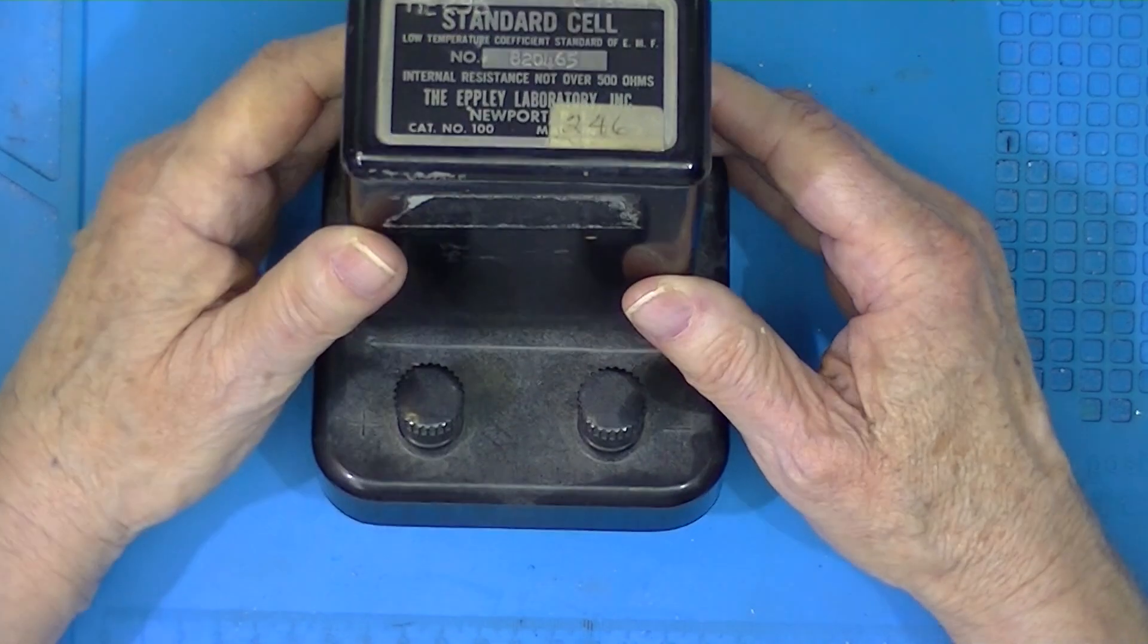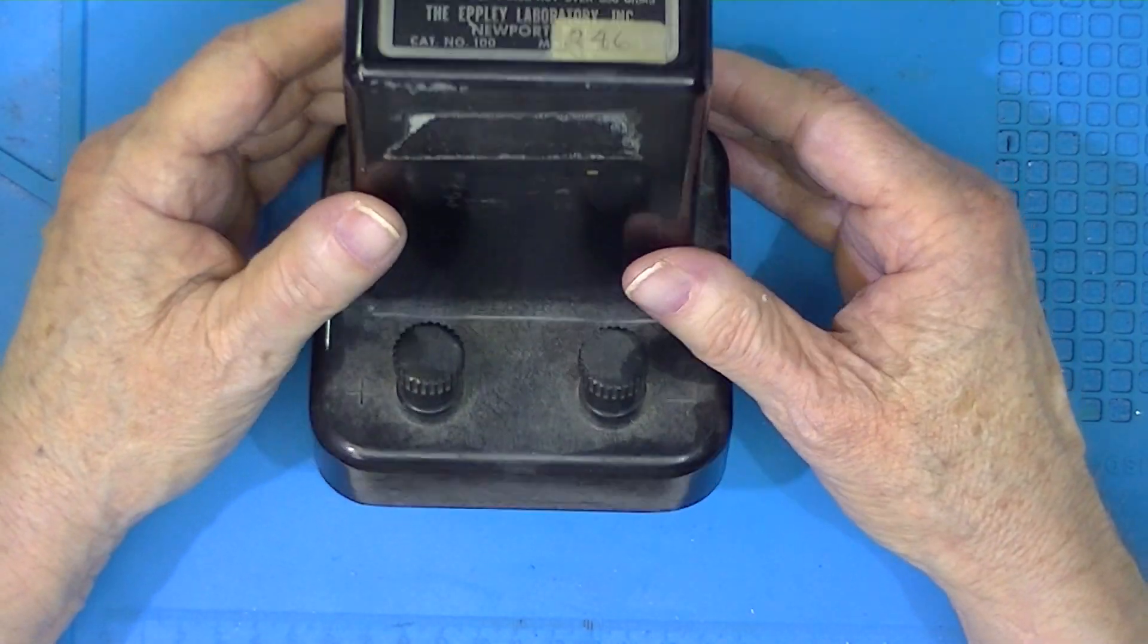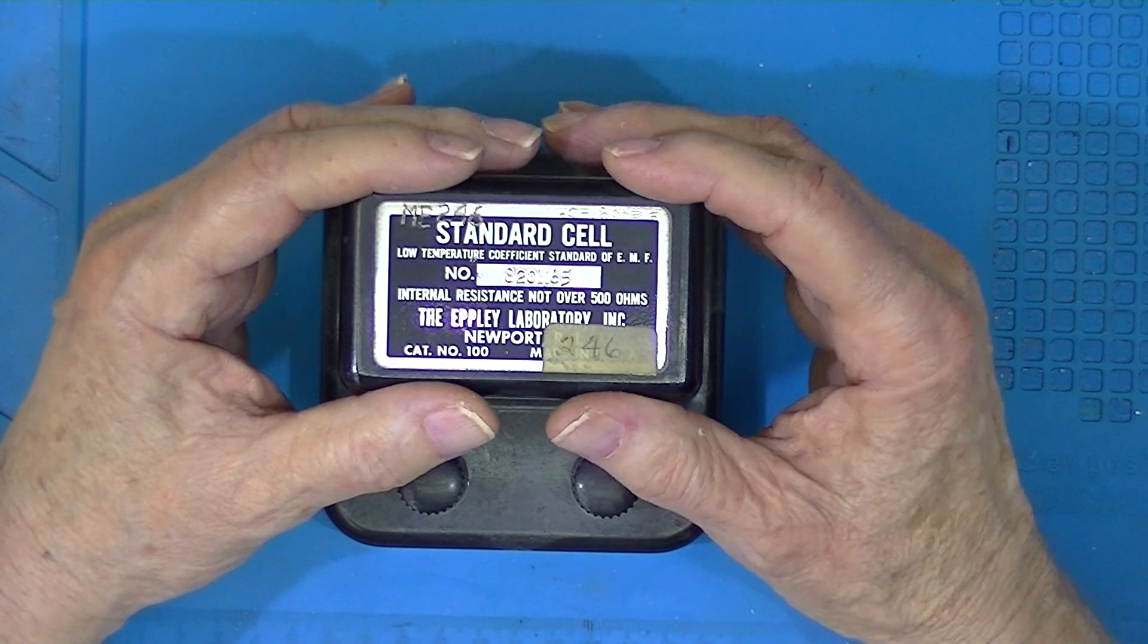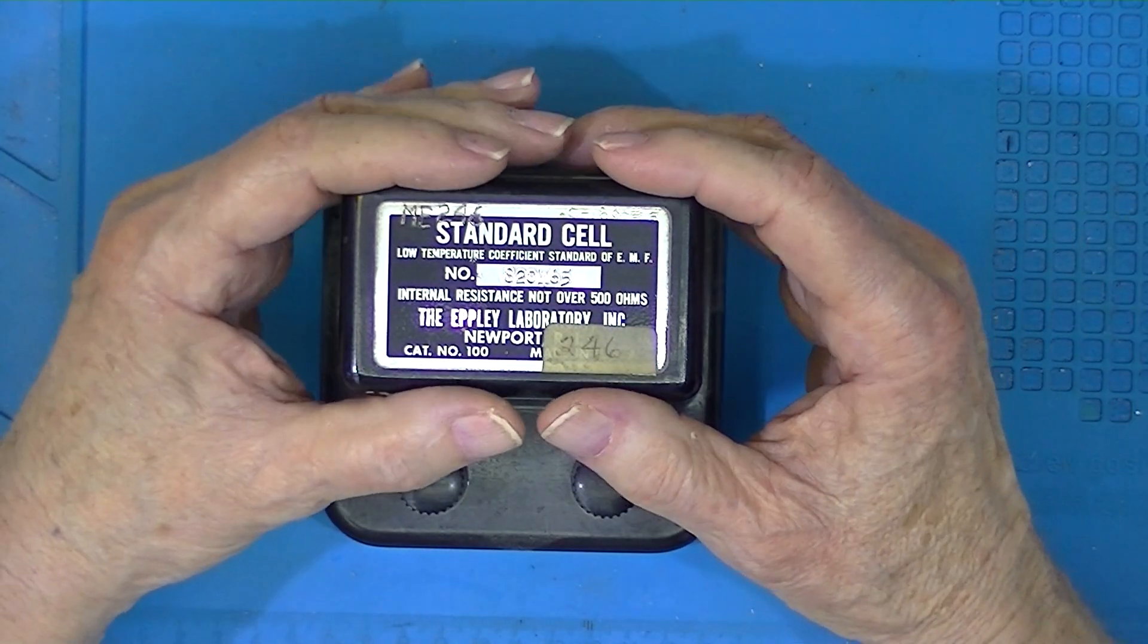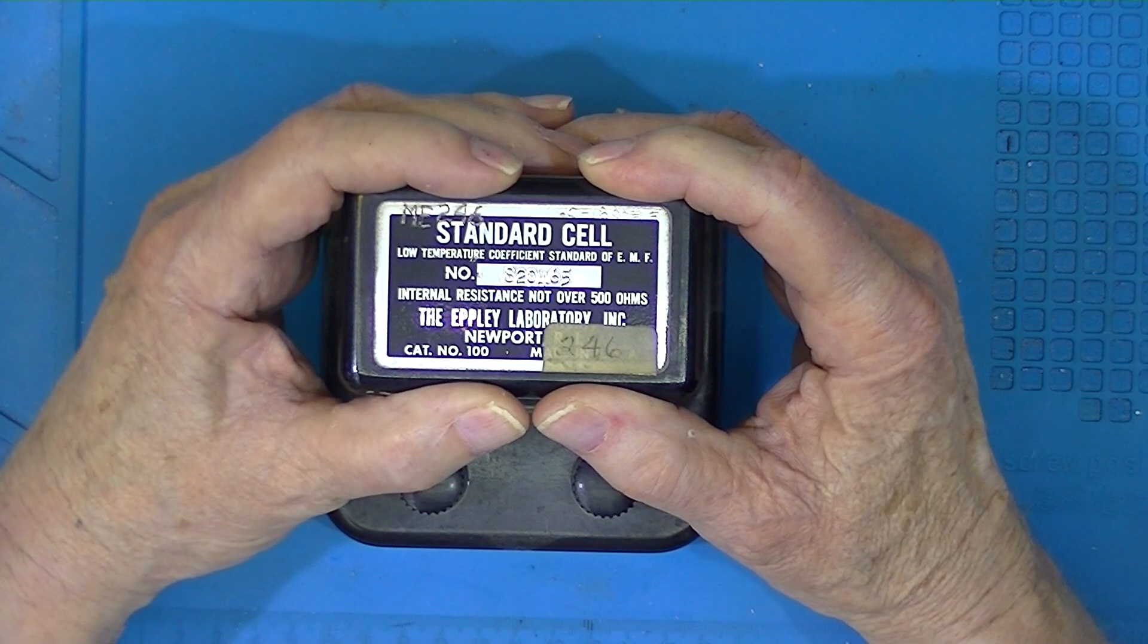And it remained the standard laboratory cell until probably 1980. You'd find these all over the place. Now this one was made by Epley, which I think was the most popular variation of the Weston cell.